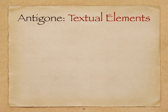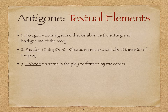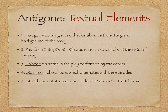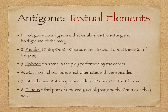Some textual elements to be aware of in this play: there's a prologue, which is the opening scene. There's the parados, which is the first time the chorus enters and chants about the theme of the play — the chorus usually elucidates the theme, so listen for that. Episodes are the ancient Greek word for scenes, so instead of scene one, two, three, it's episode one, two, three. Stasimons are choral odes. The strophe and antistrophe are the two different voices of the chorus — one half speaks to the other half and they respond. The final part of the tragedy is the exodus, usually sung by the chorus as they exit, which once again points to the theme of the show and what the audience should have learned.